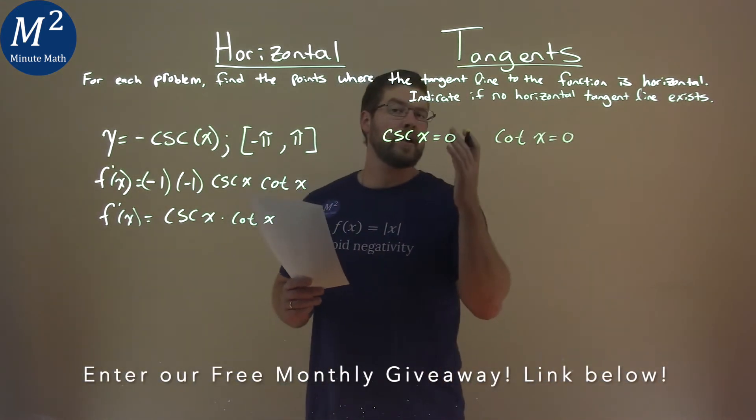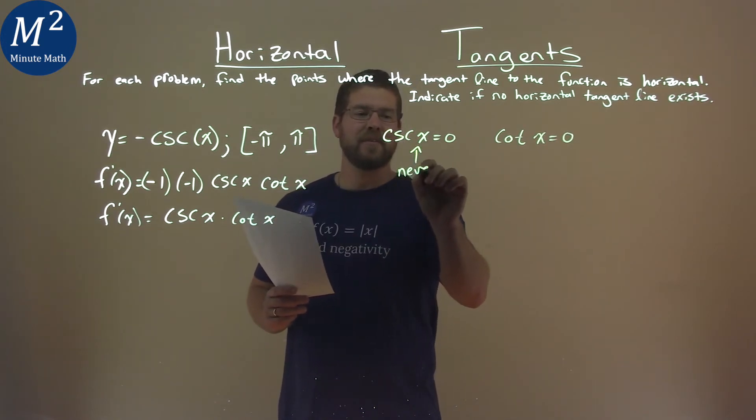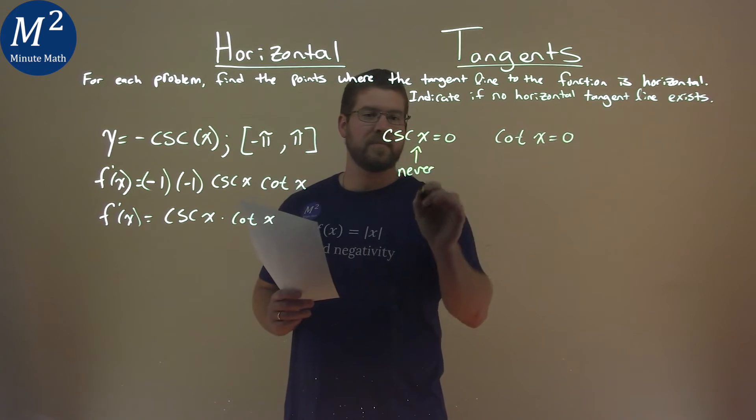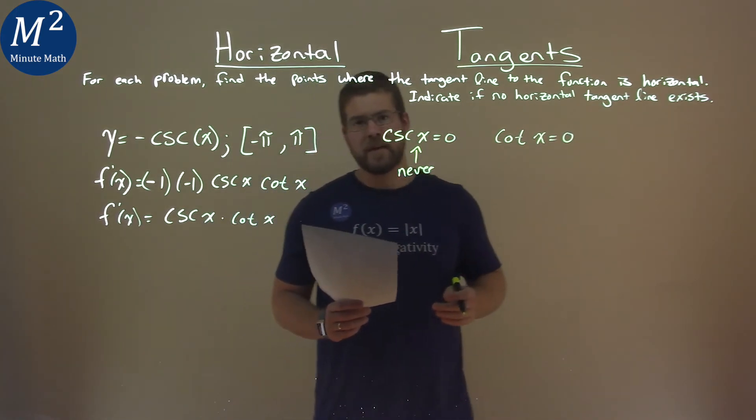Now, one thing we know about cosecant of x is that it never is equal to 0, so we actually don't have to worry about that. We only need to worry about where cotangent of x is equal to 0.